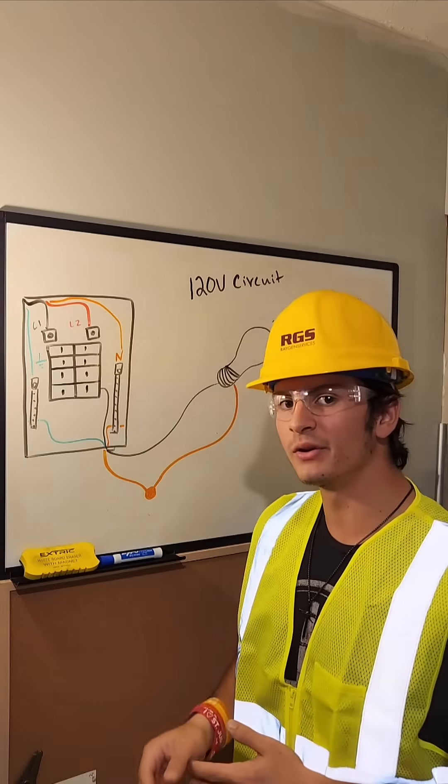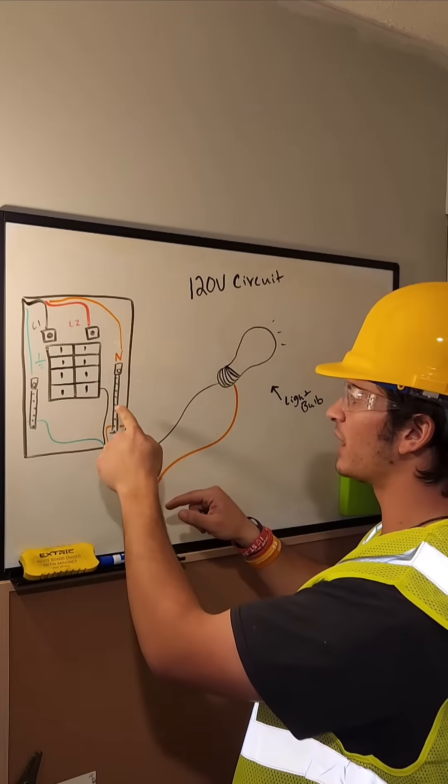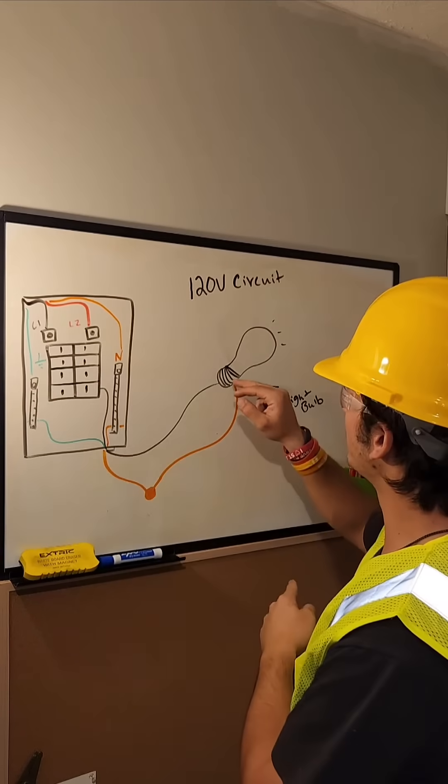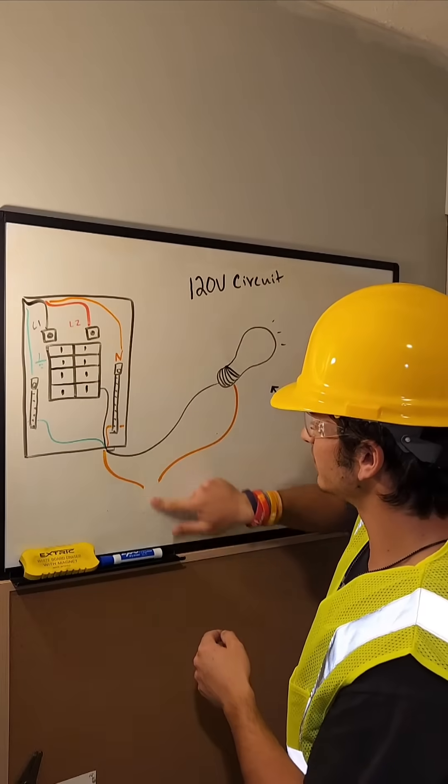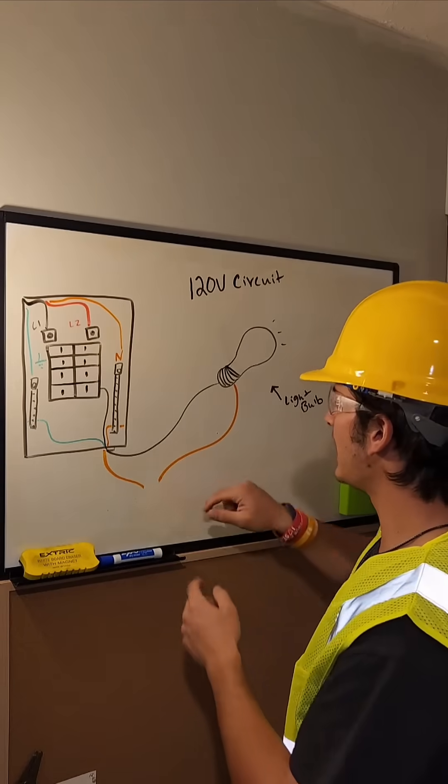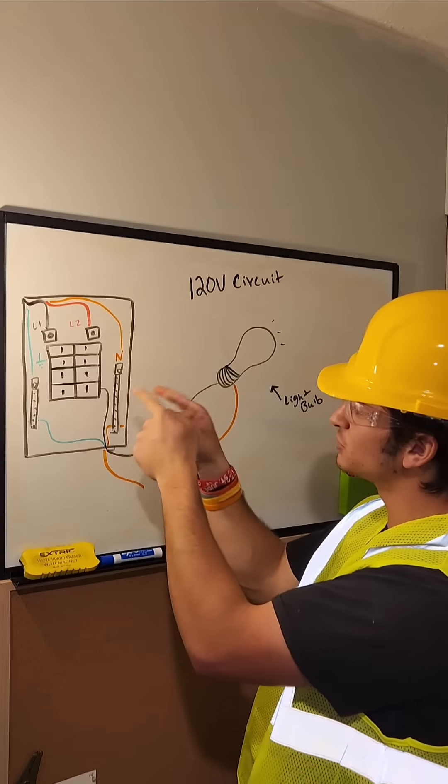In the event of an open neutral phenomena, say we have a wire nut between the wire that comes off the neutral bar and the white wire that comes off of this load, which in this case is a light bulb. Say we lose that, now this white wire has no connection back to this neutral point.